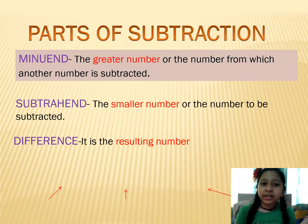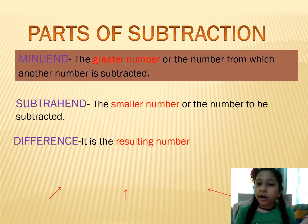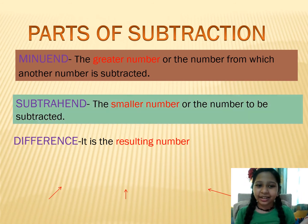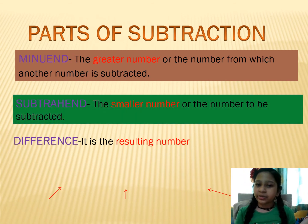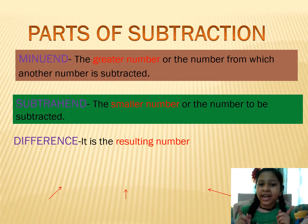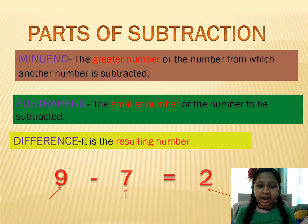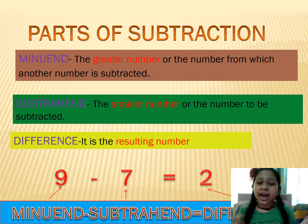Minuend, the greater number or the number from which another number is subtracted. Subtrahend, the smaller number or the number to be subtracted. Difference, it is the resulting number. 9 is minuend, 7 is subtrahend, and 2 is difference.